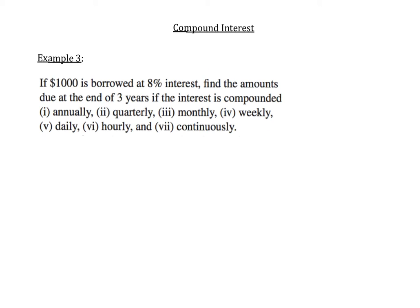I really want to unpack the first part of this sentence. When they say that we borrow $1,000, they're telling us that the principal, which is the amount that you borrow, is $1,000. When they say it's borrowed at 8% interest, they're really telling us that the annual interest rate, R, is equal to 0.08. So we want to convert that percentage into a decimal.